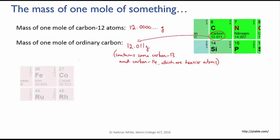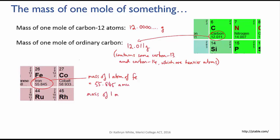So for instance, the average atomic weight of iron is 55.85 atomic mass units, and the mass of one mole of iron atoms is 55.85 grams.